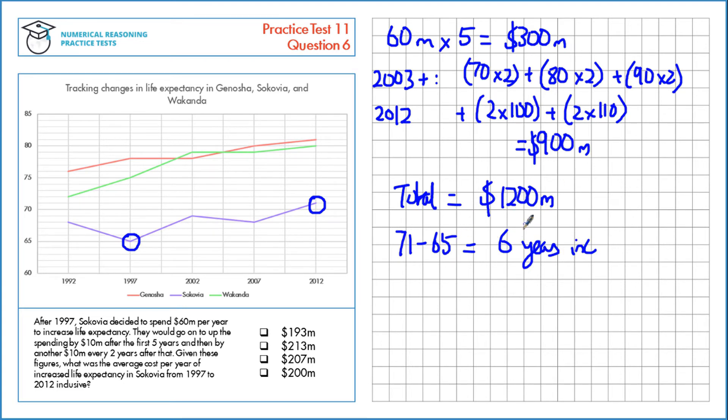Now we need the cost per year, so the cost divided by the number of years, 6 years, which gives us $200 million per year.